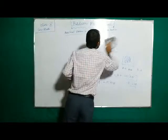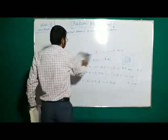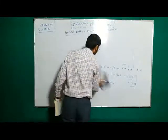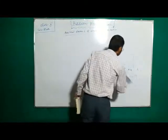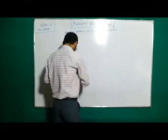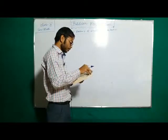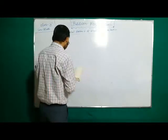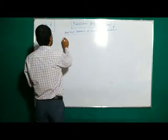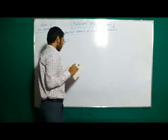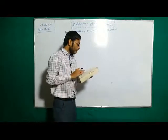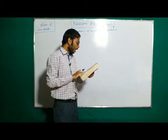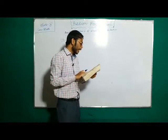Now I am solving one problem using this property: Exercise 1.6, Question 3. In a group of 400 people, 250 can speak Hindi and 200 can speak English. How many people can speak both Hindi and English?